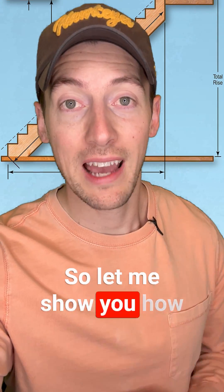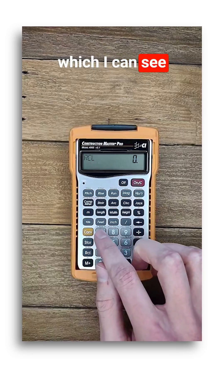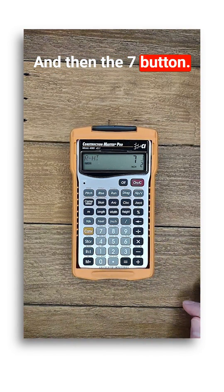So let me show you how this all works. The Construction Master defaults to seven and a half inch risers, which I can see by pushing recall and then the seven button.